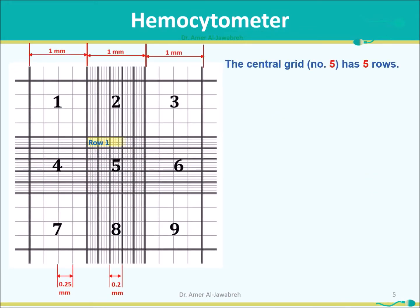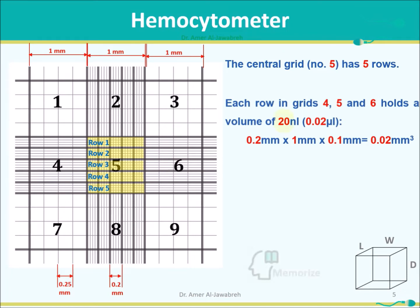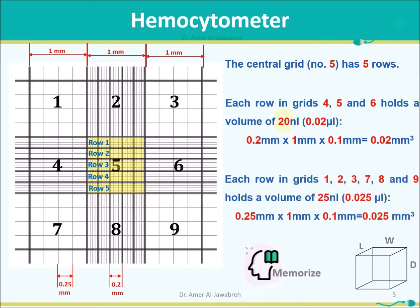The central grid, number 5, has five rows. Each row in grids 4, 5, and 6 holds a volume of 20 nL (0.2 x 1 x 0.1 mm). Each row in grids 1, 2, 3, 7, 8, and 9 holds a volume of 25 nL (0.25 x 1 x 0.1 mm).